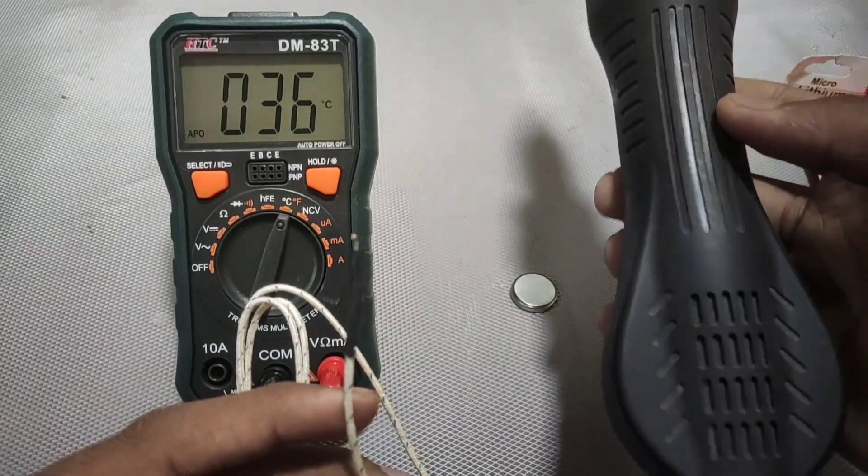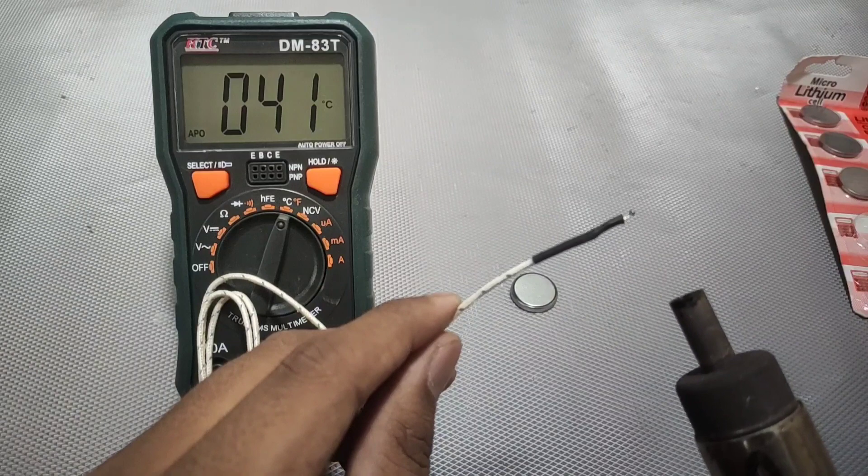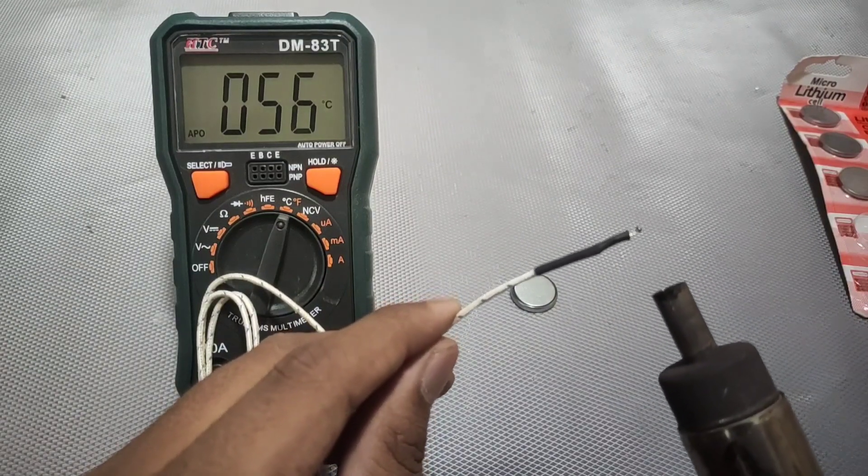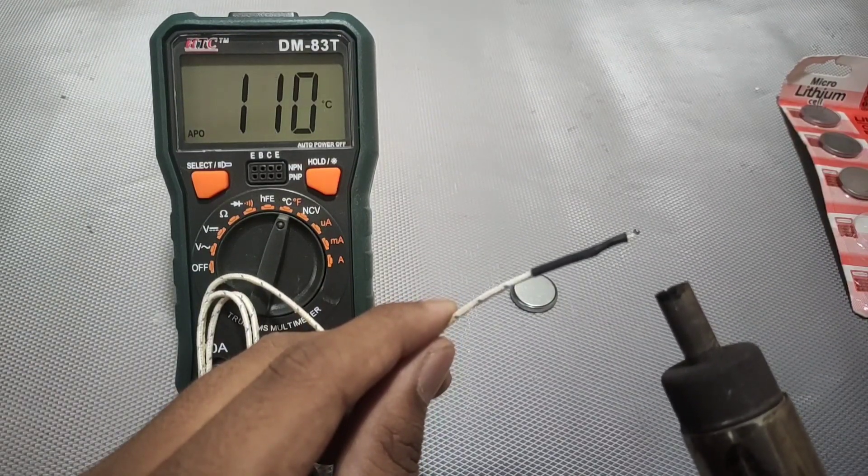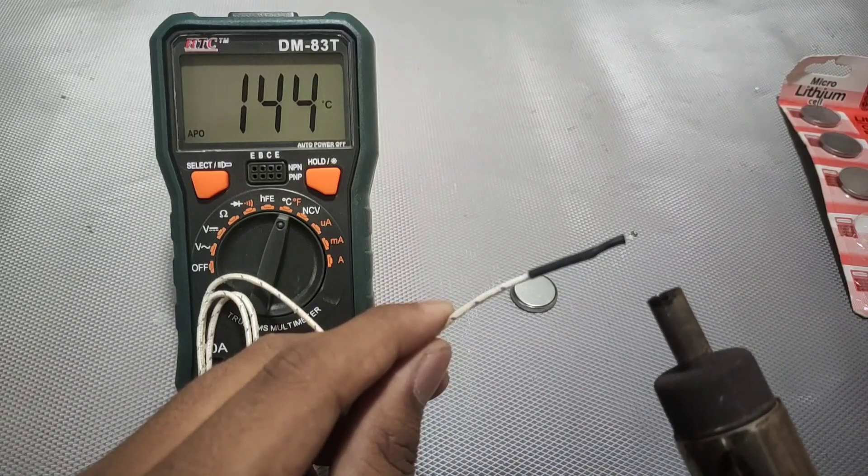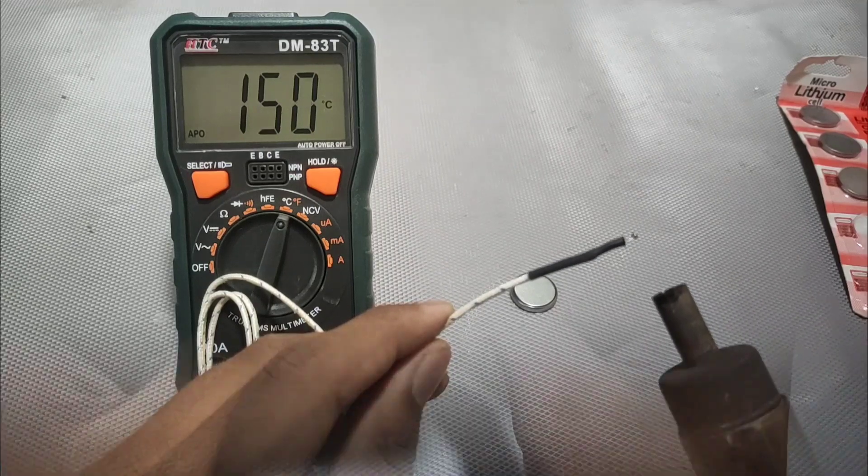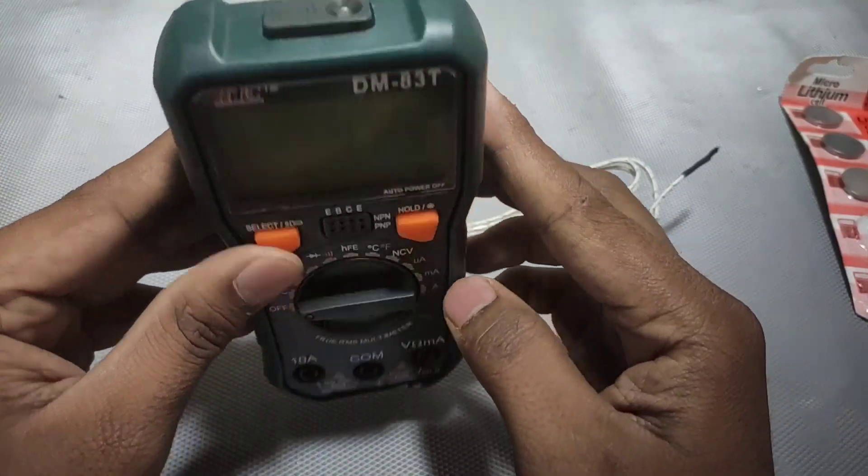For faster reading we will use hot air gun whose temperature is set to 150 degrees. And you can see the temperature rise. Let's see how accurate these temperature readings are shown. And you can see it shows accurate reading.